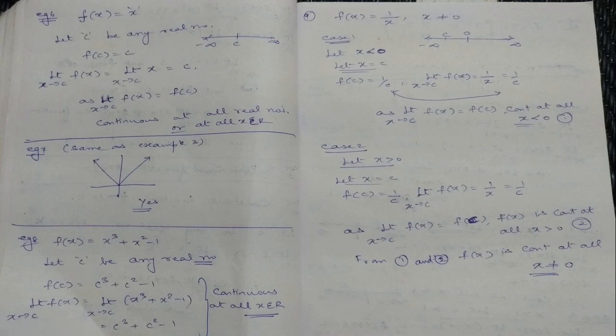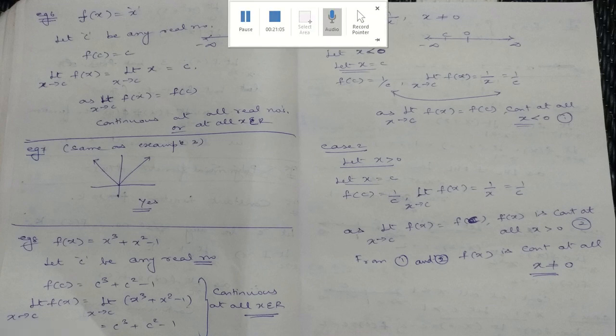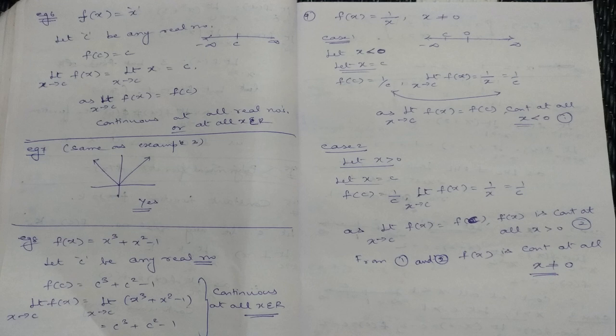Example 7 is the function f(x) = |x| — is the modulus function continuous everywhere? Example 3 proved it is continuous at x = 0. At all other points it will also be continuous: after 0 the value will be c, before 0 the value will be −c. You can work out this sum yourself.